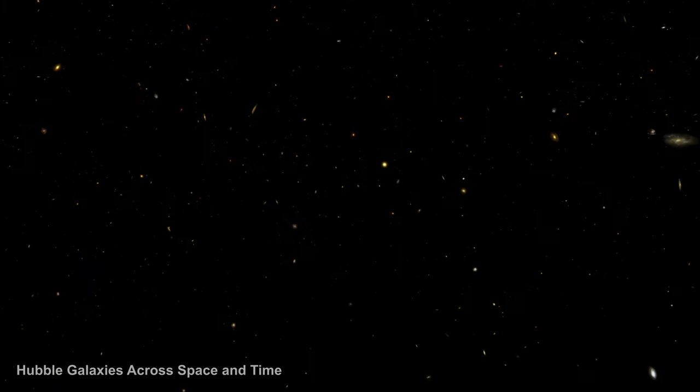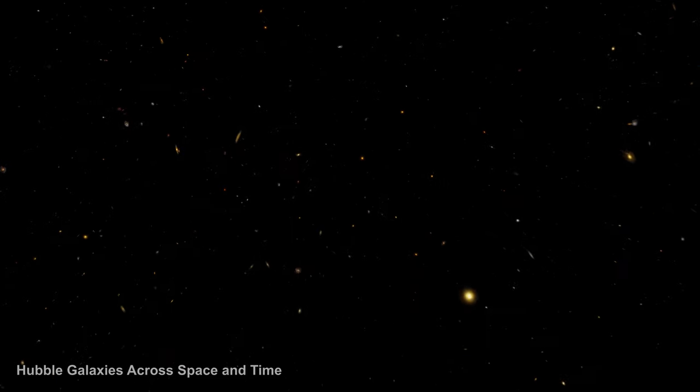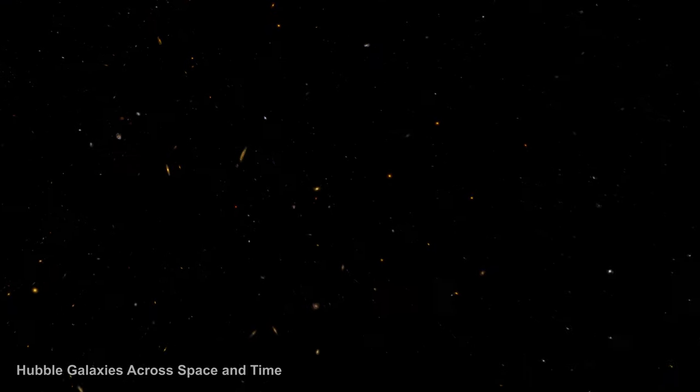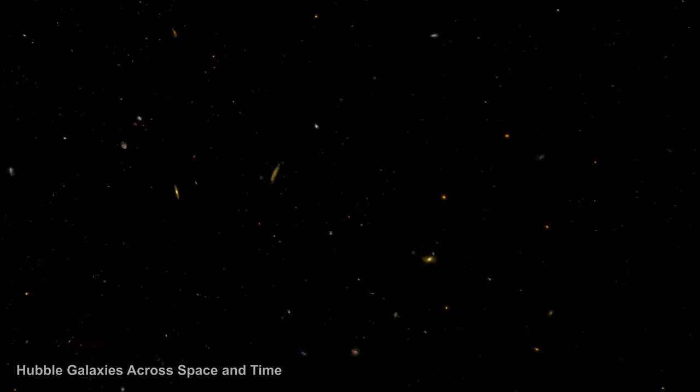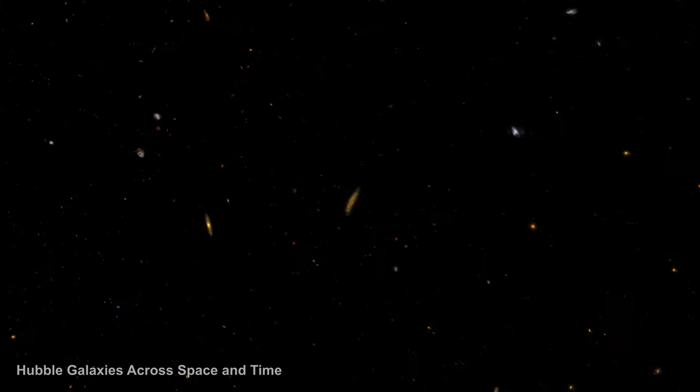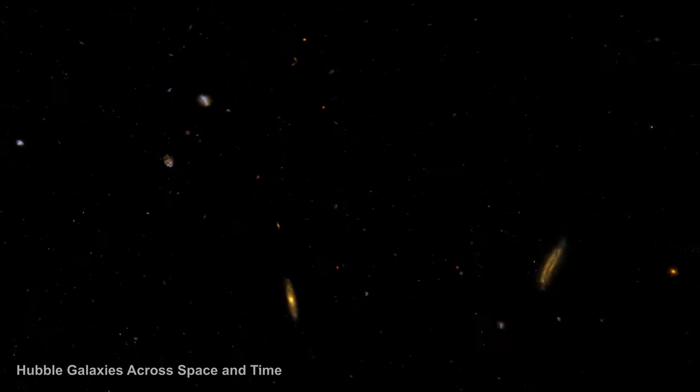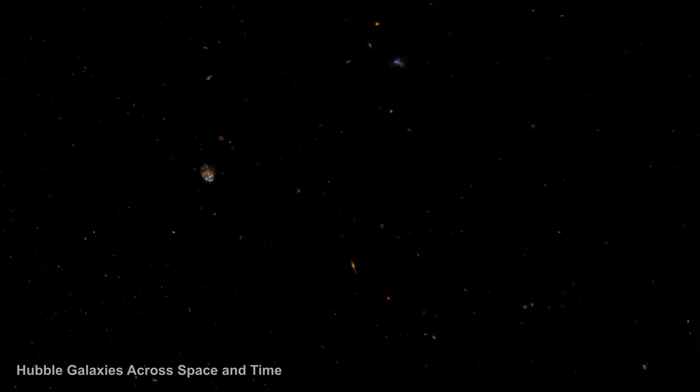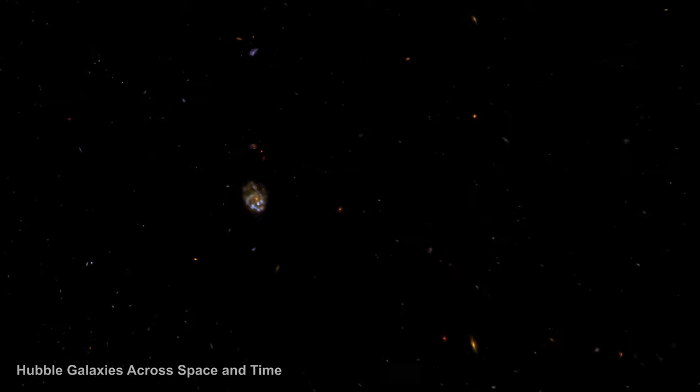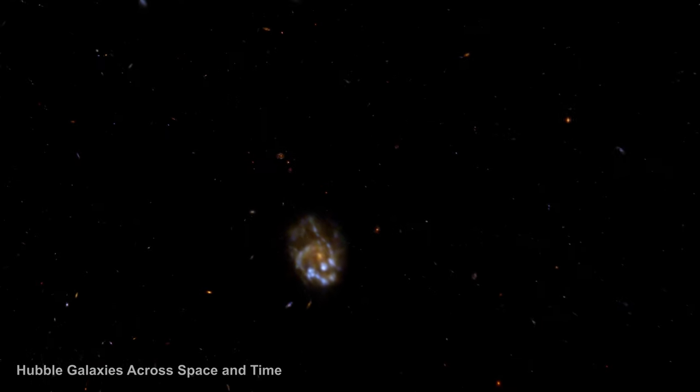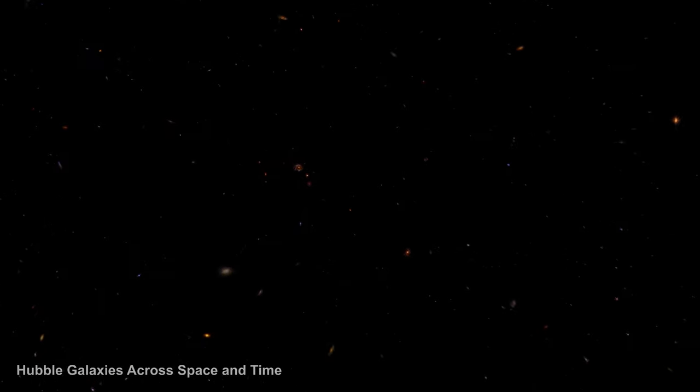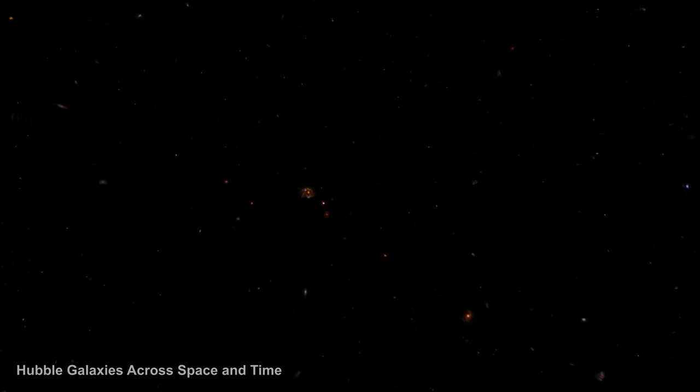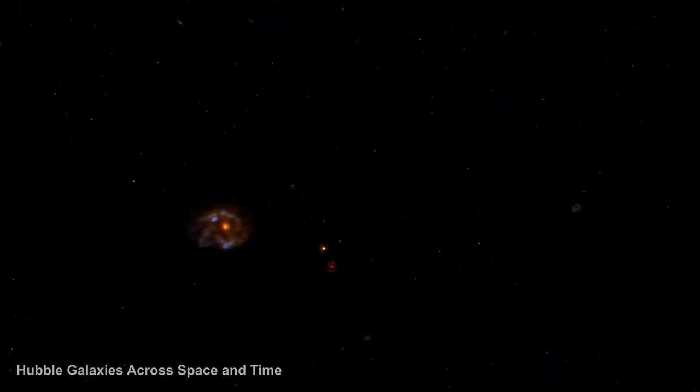The flow of all galaxies away from each other, with faster velocities the further away from each other they are, cannot happen in a fixed volume, because in a fixed volume some reference frames would have to have distant objects heading towards them for others to have them moving away. It can only be explained if the space that these galaxies exist in is itself expanding.